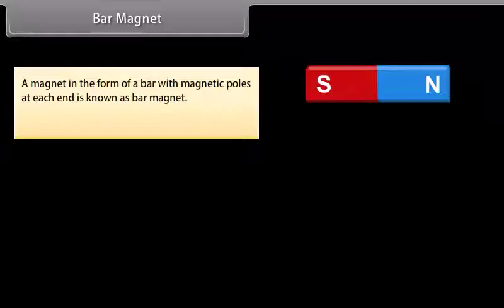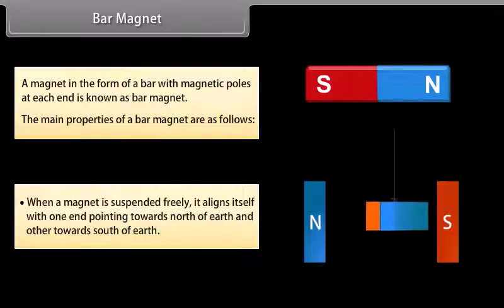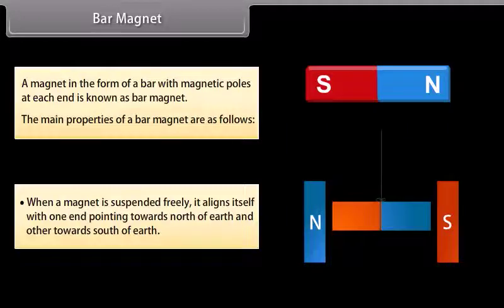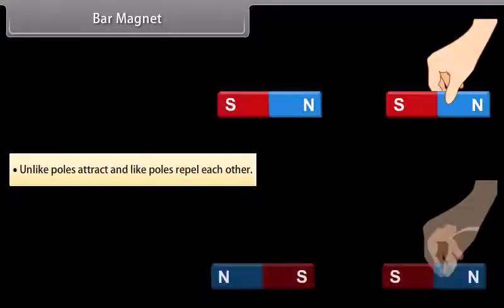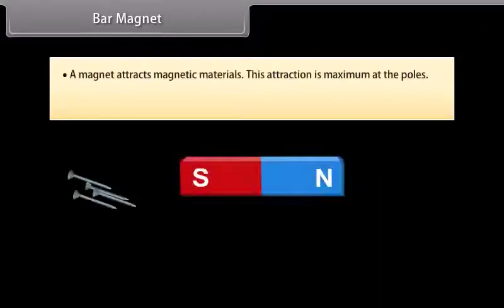A magnet in the form of a bar with magnetic poles at each end is known as a bar magnet. The main properties of a bar magnet are: when a magnet is suspended freely, it aligns itself with one end pointing towards the north of Earth and the other towards the south. Unlike poles attract and like poles repel each other. A magnet attracts magnetic materials, and this attraction is maximum at the poles.